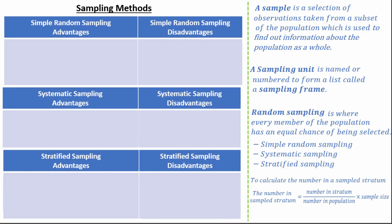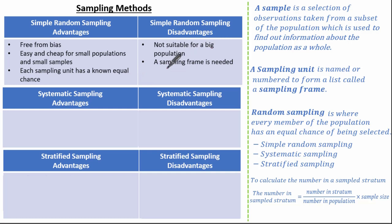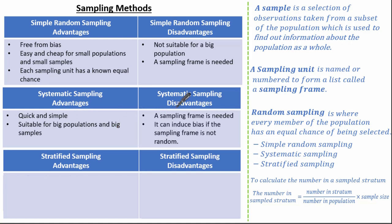It's always important to go through advantages and disadvantages of any sampling method. For simple random sampling: advantages are it's free from bias, cheap and easy for small populations and samples, and each sampling unit has a known equal chance. Disadvantages are it's not suitable for big populations and a sampling frame is needed. For systematic sampling: advantages are it's quick, simple, and suitable for big populations and samples. Disadvantages are a sampling frame is needed and it can introduce bias if the sampling frame is not random.